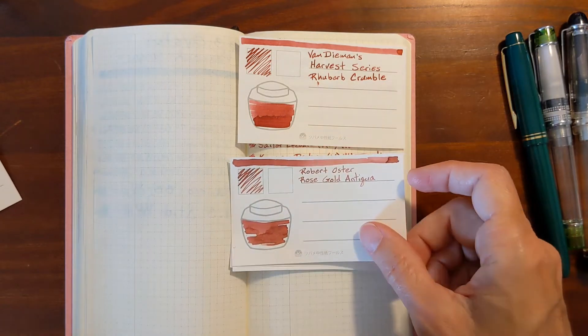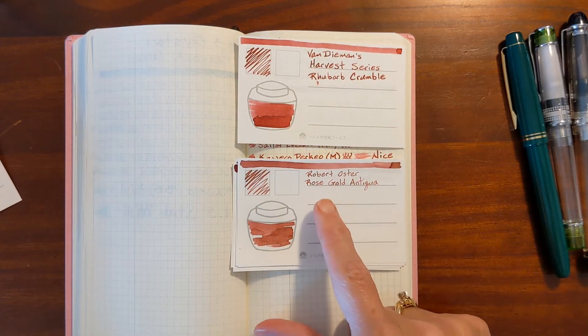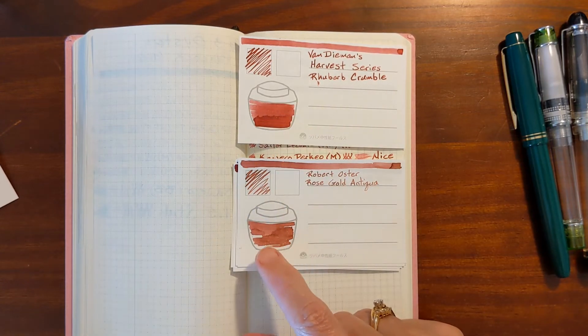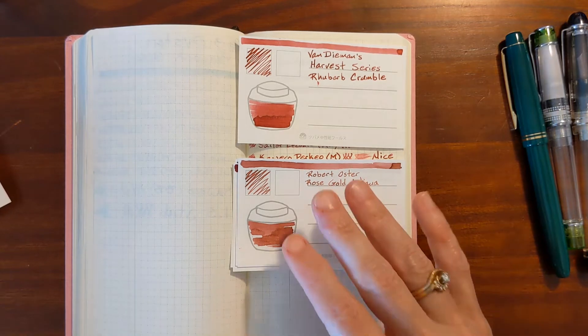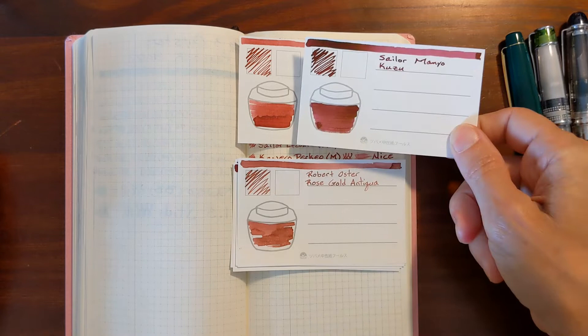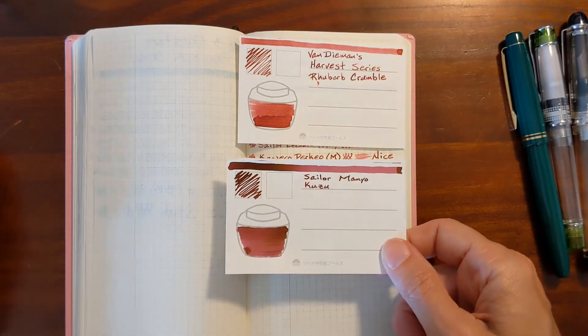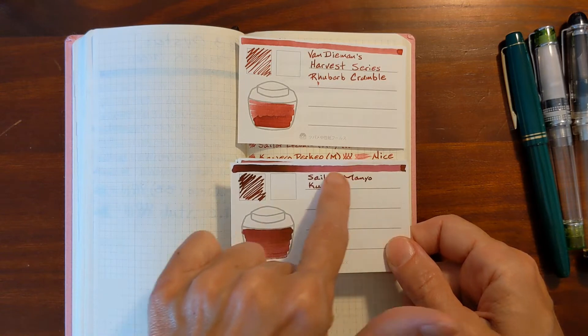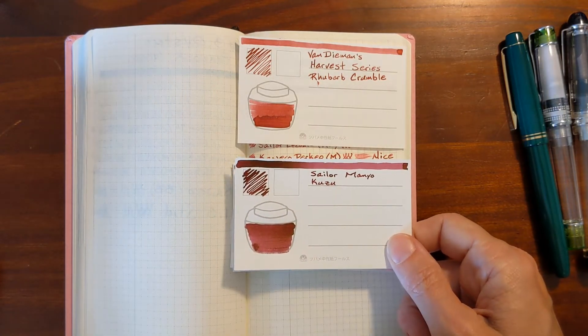Rohrer & Klingner Rose Gold Antiqua is, the underlying ink is a rosy color like this, but that gold shimmer that's in it alters the color, the appearance of the color a little bit. Sailor Manyo Kuzu is a similar color, but because it's more saturated, you get a much wider range of colors or shades.